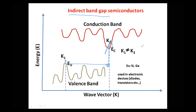Examples of indirect bandgap semiconductors are the well-known silicon and germanium semiconductors, which we generally use in pure electronic devices such as diodes and transistors.